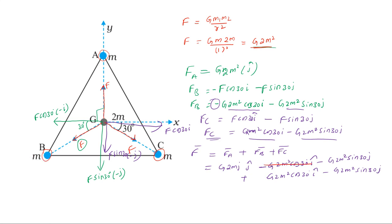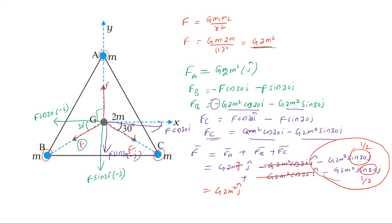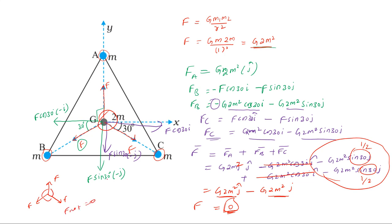The cos30 terms cancel out. G into 2M squared j-cap minus one-half minus one-half equals G into 2M squared times j minus G into 2M squared times j, which cancels to zero. Total force equals zero. Net force on the centroid is zero. Three forces of equal magnitude acting at 120 degrees to each other give net force equal to zero.